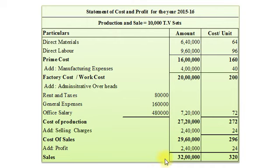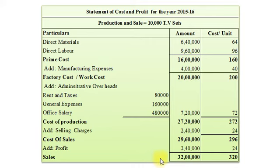So our total sales amount to Rs. 32,00,000 and per unit Rs. 320. This Rs. 32,00,000 is as per our trading and profit and loss account. Now we will prepare the estimated cost sheet for the year 2016-17.